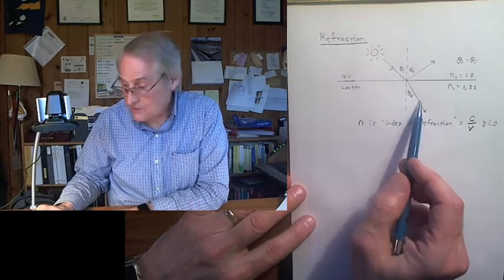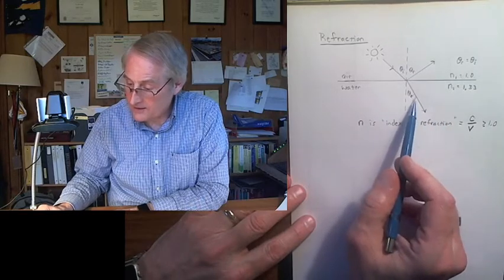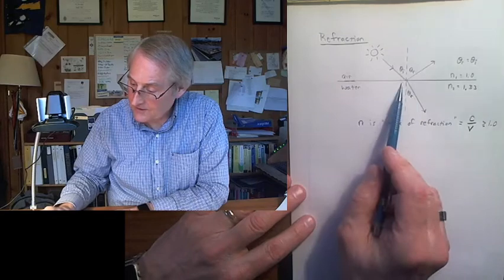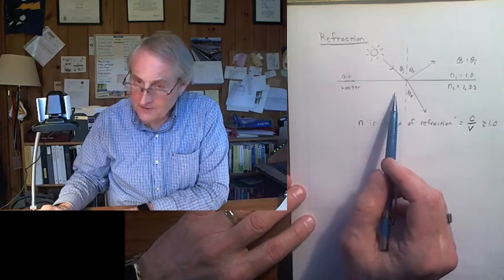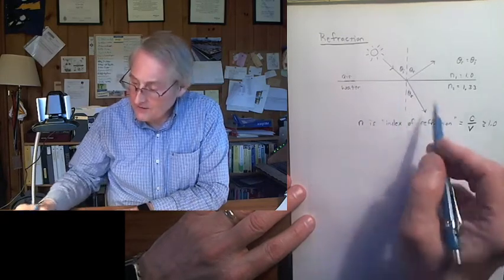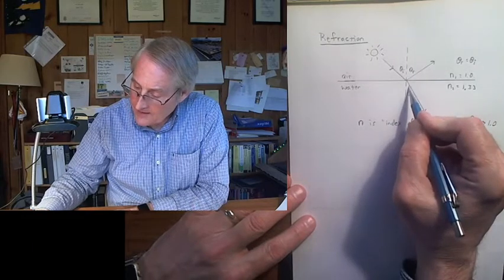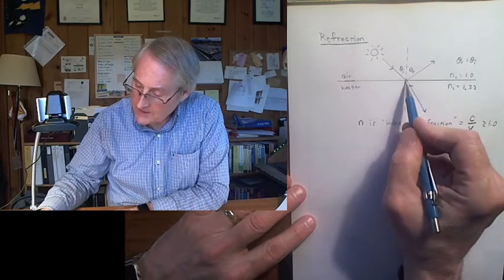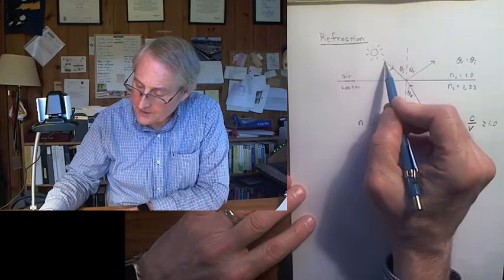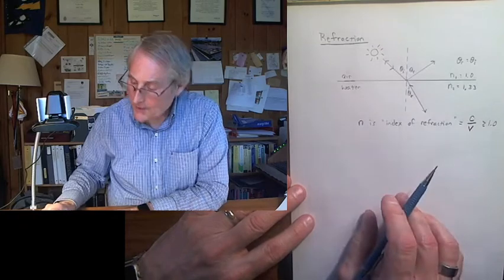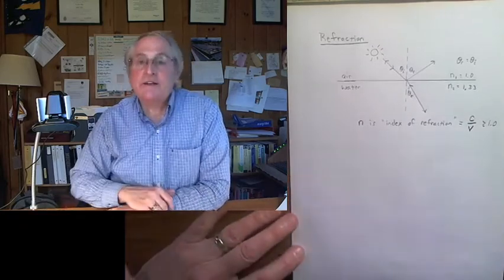When they come out of the higher index, like from water, then they actually move away from normal. You can see this here in this diagram very easily because light can actually go both ways. If you had a source of light down under water, the light ray would come up here, and when it gets to the surface, it would be redirected away from normal. So that's the qualitative behavior.